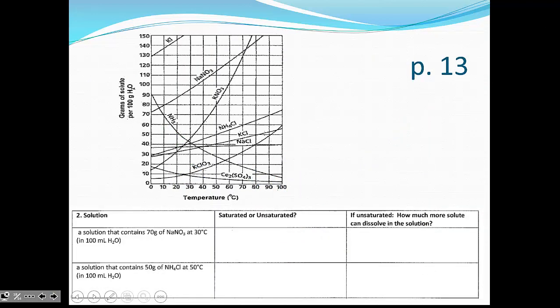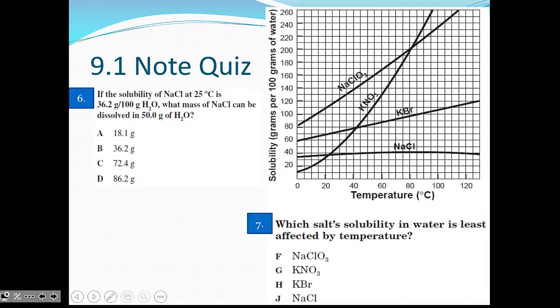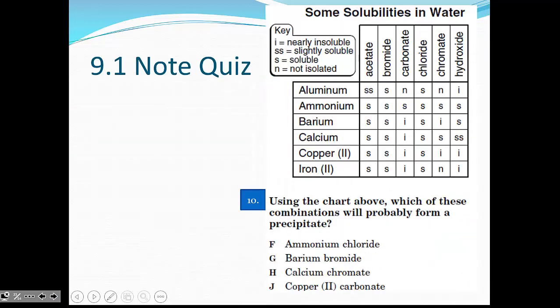With that, you can finish page 13. You can also do note quiz question 6789. For number 10, a salt is insoluble when the cations attraction for the anion is way stronger than its attraction for water. So if water were to come by, this attraction is too strong, the water can't separate them.